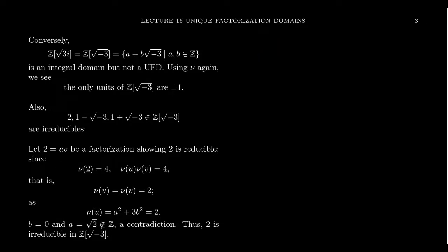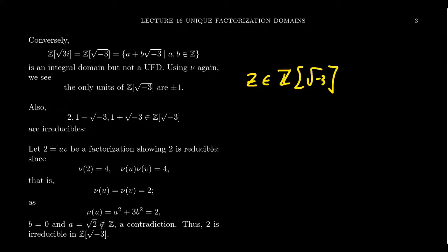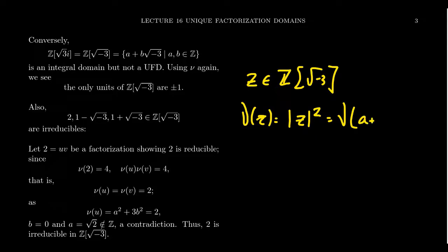A typical element of this ring looks like a + b√(-3), where a and b are arbitrary integers. We can make arguments using the norm: for an element z in this ring, the norm of z equals the complex modulus of z squared. If our element has the form a + b√(-3), we compute the norm as follows.